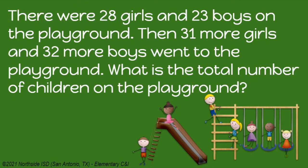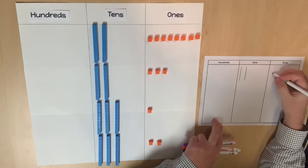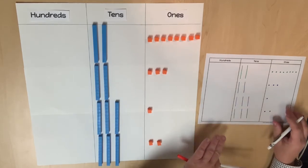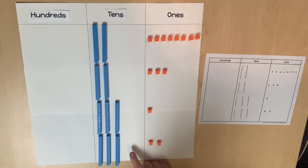Let's repeat the same process using four addends. There were 28 girls and 23 boys on the playground, then 31 more girls and 32 more boys went to the playground. What is the total number of children on the playground? Model each value on the place value chart and create a pictorial representation using different colored pencils. Consider each place value and determine whether there are enough ones to regroup to compose a ten, and whether there are enough tens to regroup to compose a hundred. Model this on the place value chart and in the pictorial representation.